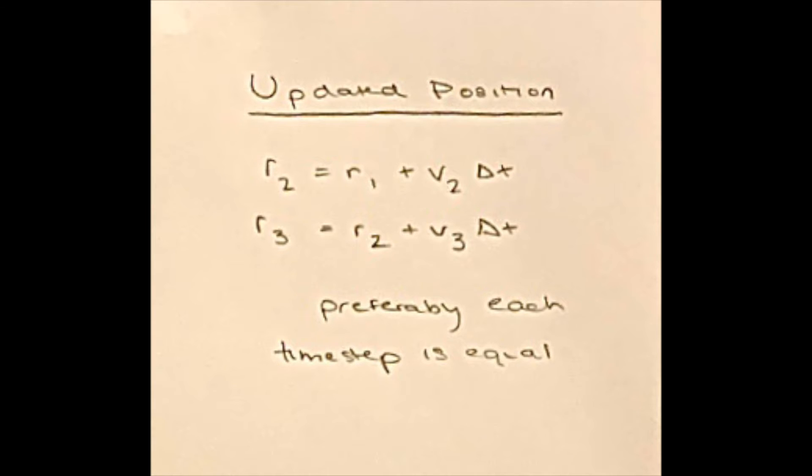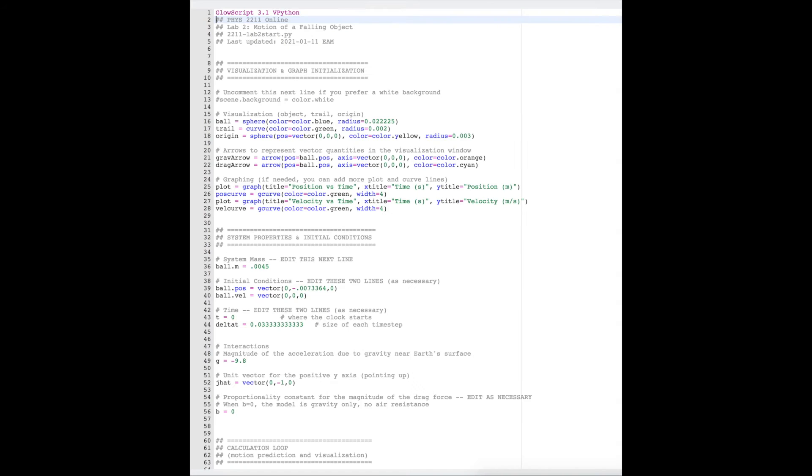Because the object will most likely not reach terminal velocity in this lab, the object, in my opinion, will continually accelerate due to the force of gravity and drag. This claim of a not-straight or thus a curved change in position versus time graph is proven by the GlowScript models shown.